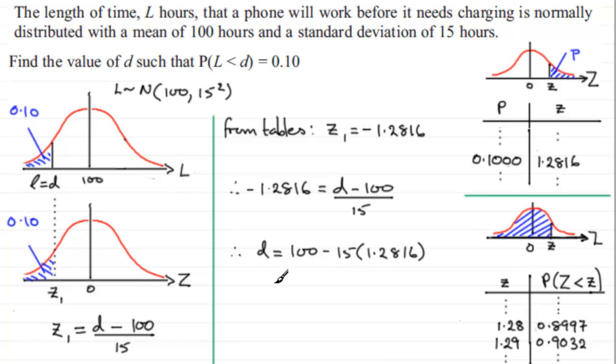And working this out gives me 80.776. And if I round this to one decimal place, the answer is 80.8 to 1DP.